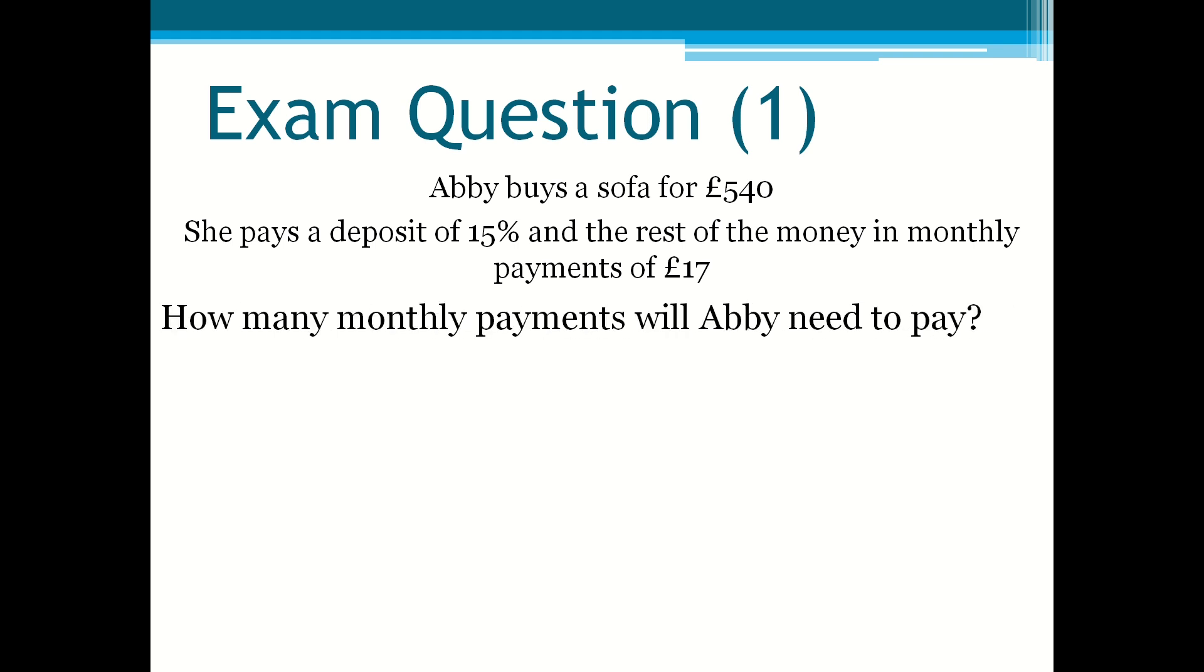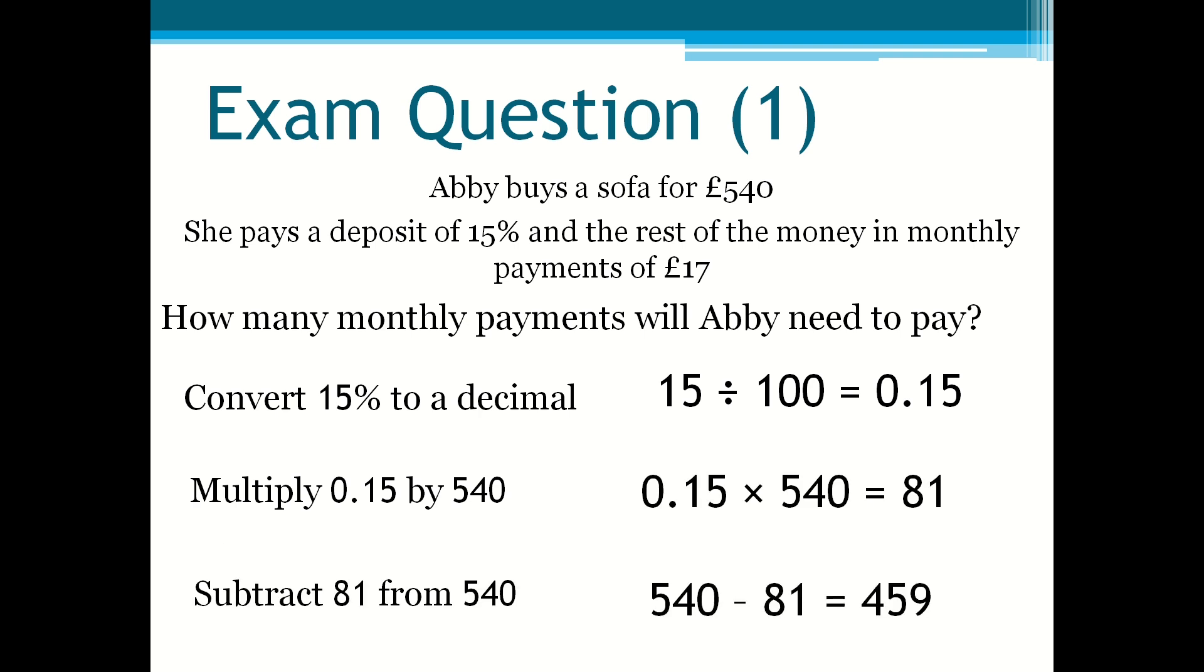First, convert 15% to a decimal, which would be 0.15. Then you multiply 0.15 by 540 to get 81. Then subtract 81 from 540 and you will get 459. That's the amount of money she has left after paying the deposit.